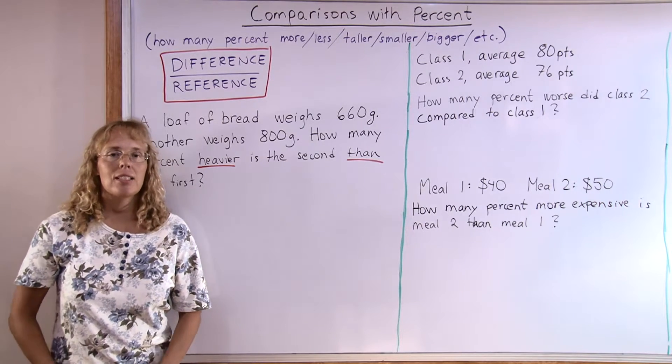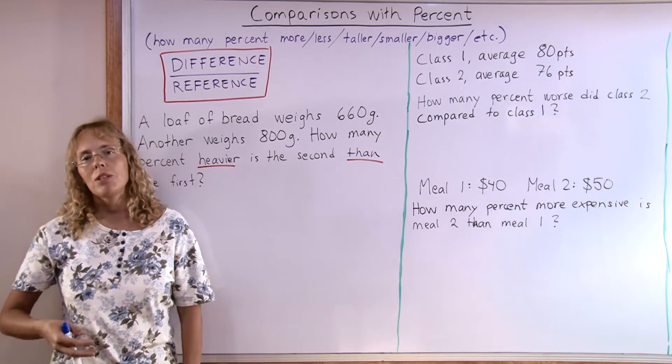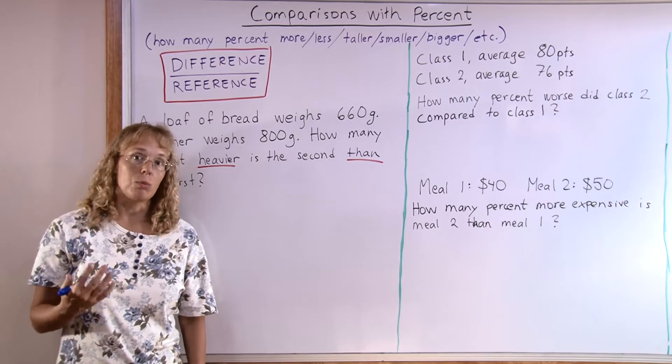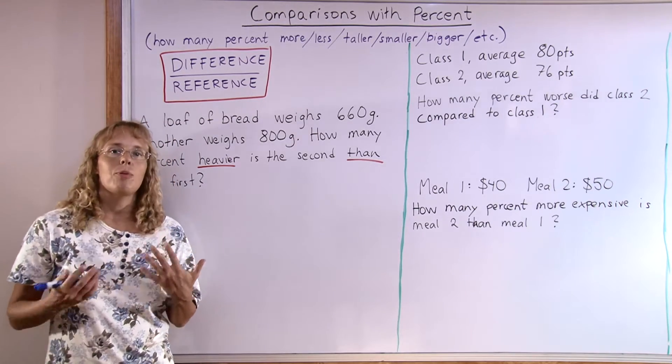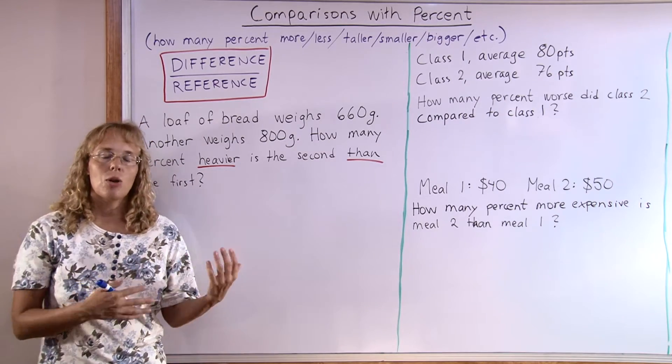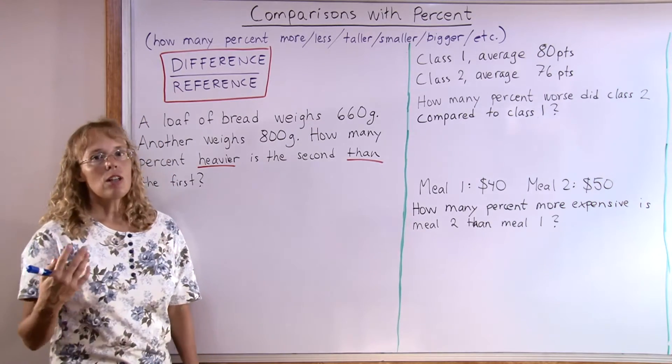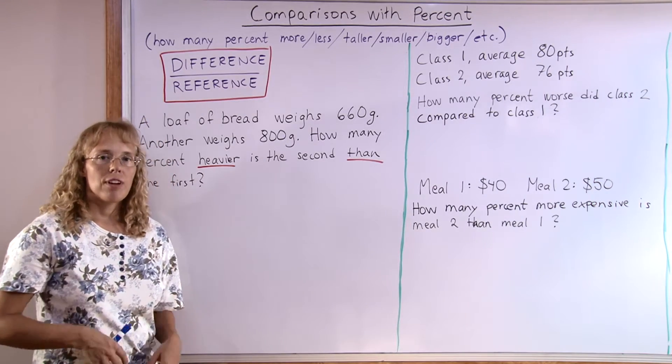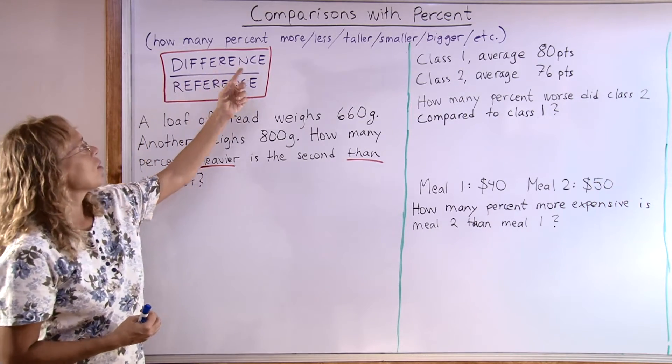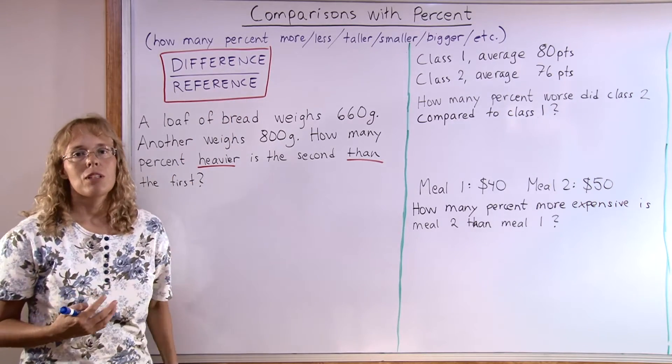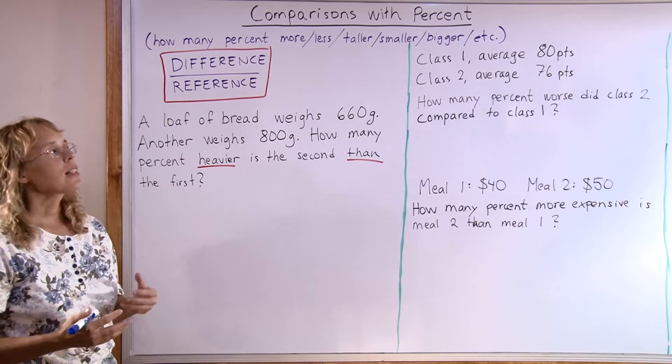That basically means the question is asking how many percent more or less, or how many percent heavier, taller, or smaller something is than something else. In your problem, there should be two quantities given, and then you're comparing how many percent more or less. They always solve the same way. You have to first find the actual difference between the two quantities, and then you divide that by your reference quantity, whatever quantity it is compared to. Examples will make this clear.